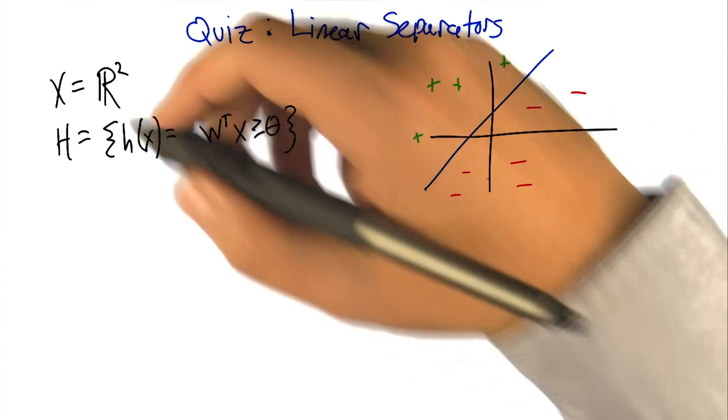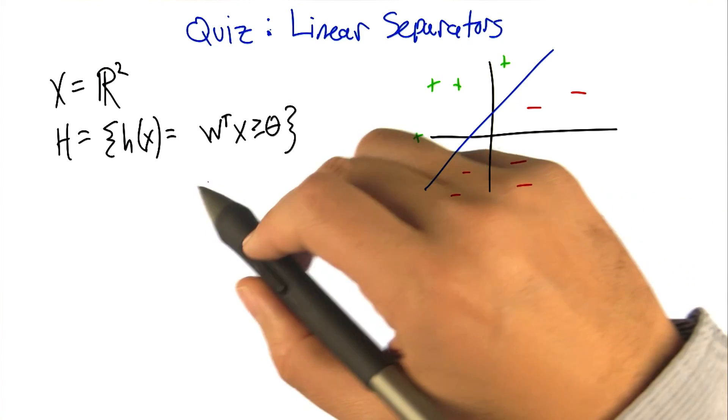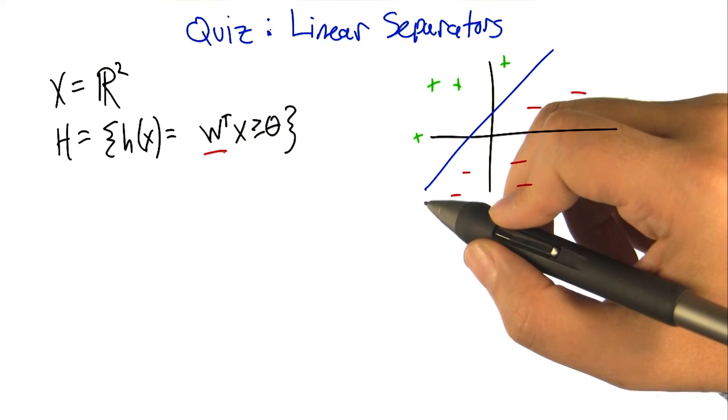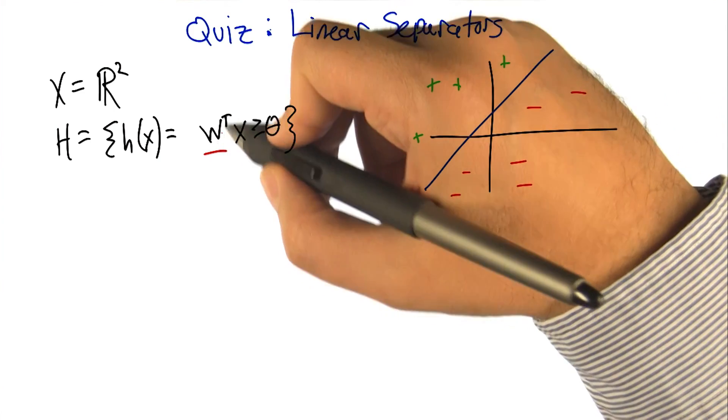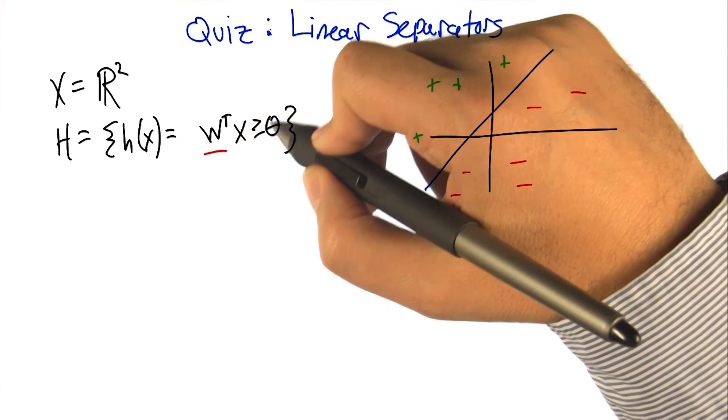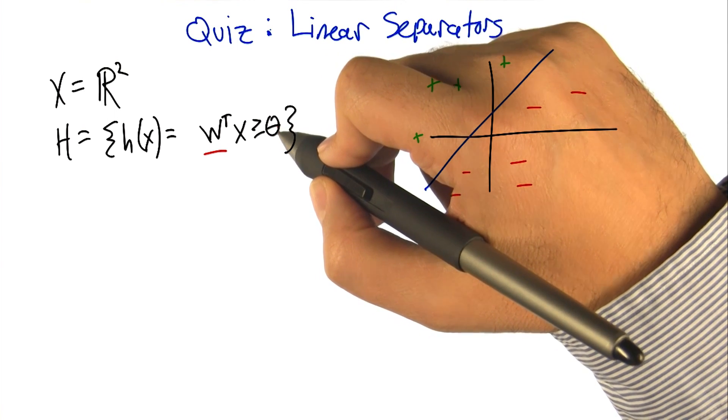So let's say that we're in two-dimensional space. And so our hypotheses have the form that you've got a parameter, a weight parameter w, and we're going to just take that weight parameter, take the dot product with whatever the input is, and see whether it's greater than or equal to some value theta.